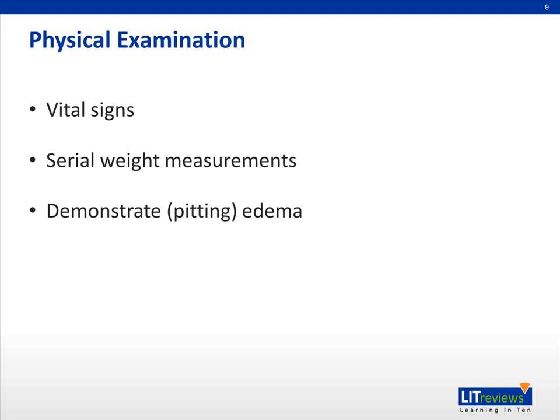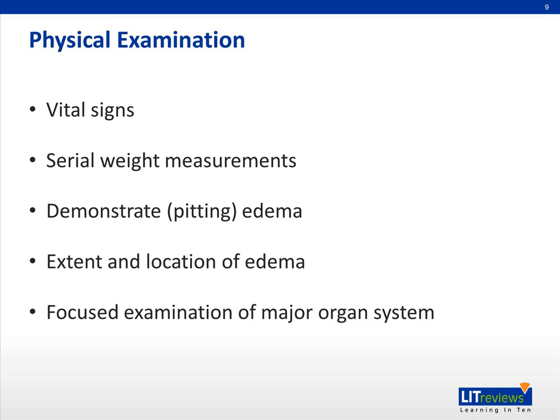In order to demonstrate pitting edema, you need to feel for a depression after pressing against a bony surface in the area of interest for at least three seconds. Do take note to look at the patient's face, as you may cause pain while pressing. Describing the location and extent of the edema, such as localized versus generalized, can help to narrow down your differential diagnosis. This will be followed by a focused examination of the relevant organ system, such as cardiovascular examination for suspected cardiac failure, and abdominal examination for suspected nephrotic syndrome. Lastly, a useful bedside test is to inspect the urine for hematuria or dark-colored urine.